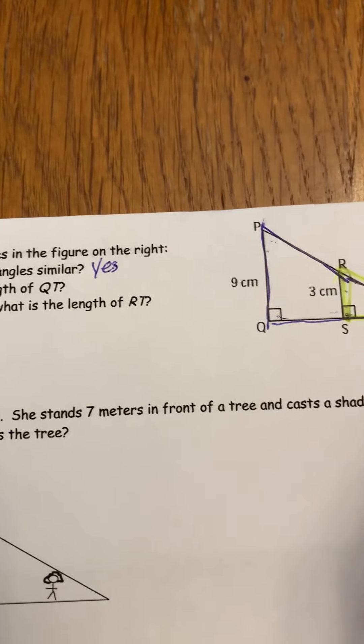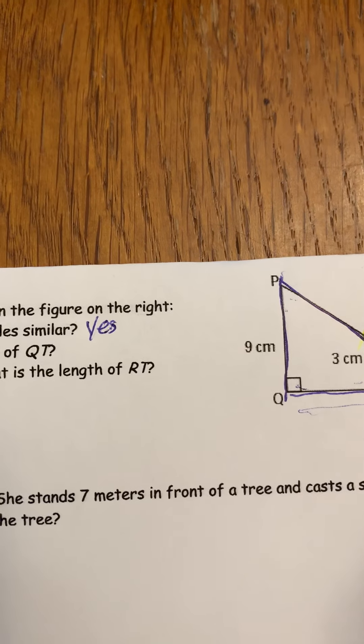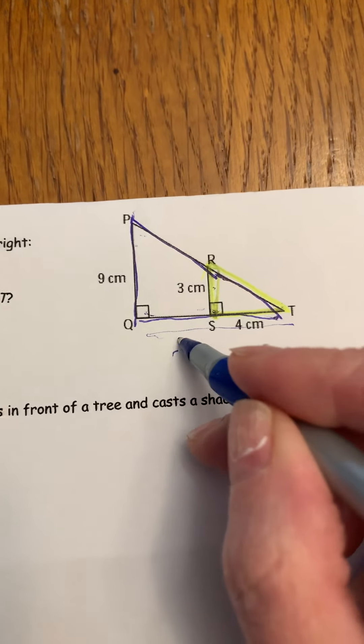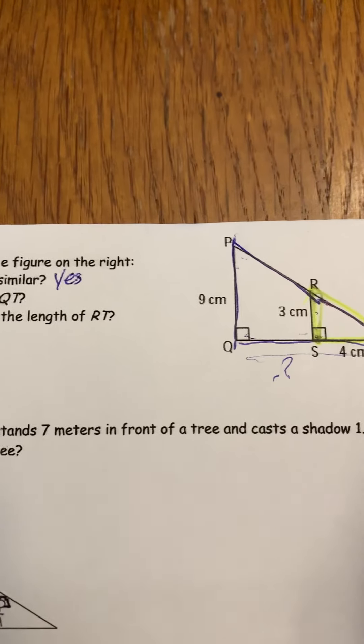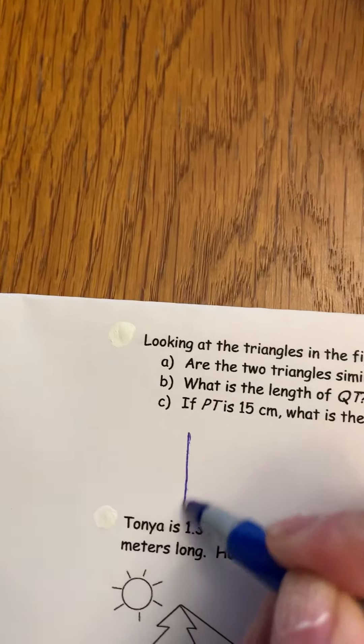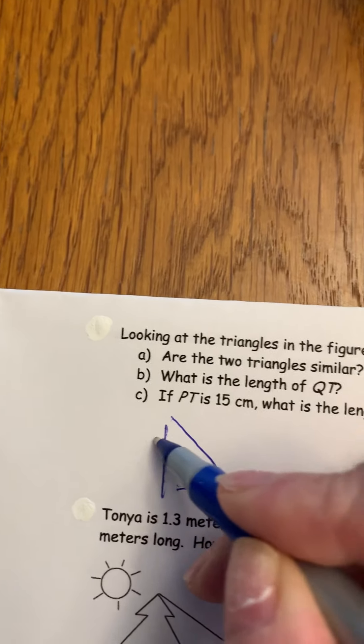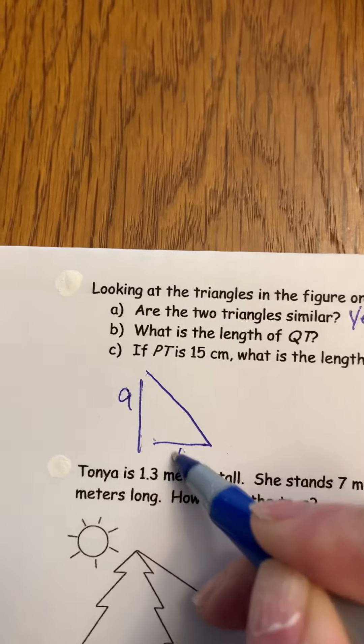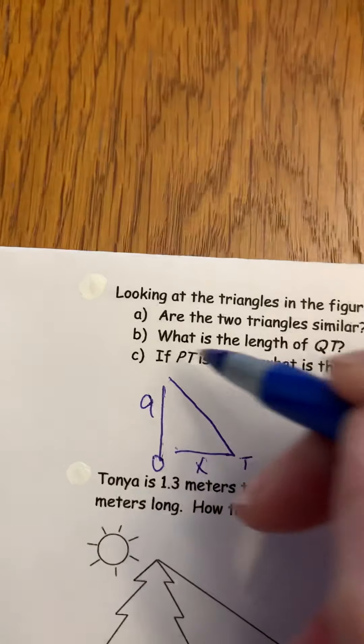That's the gist of it. That's a yes. And now we want to find the length of QT, so this whole big bottom here. And we think how are we going to do that? Well, I always separate these triangles and I draw them separately.